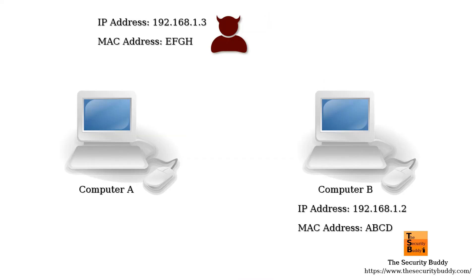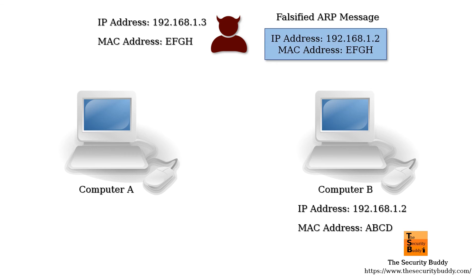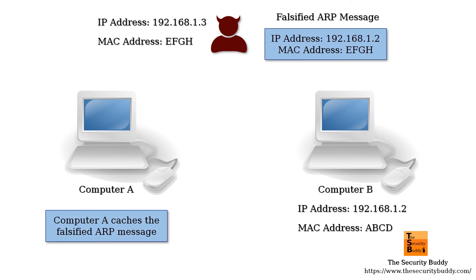In an ARP spoofing attack, an attacker links the MAC address of the attacker's device with the IP address of the victim's device. As a result, all the network packets that are meant for the victim reach the attacker first. The attacker can now easily steal the sensitive information, modify the packets, and send the modified packets to the victim.